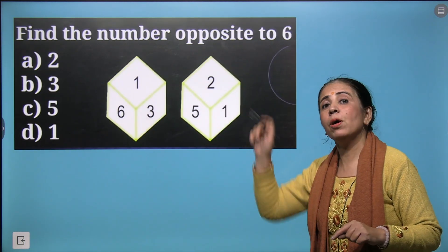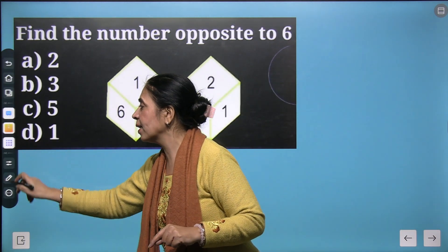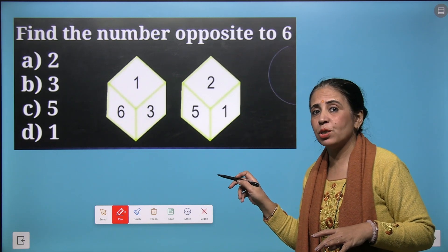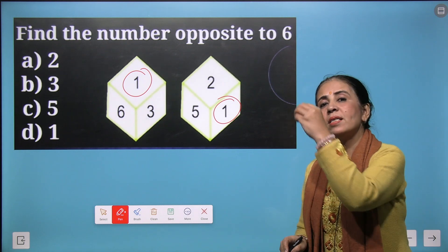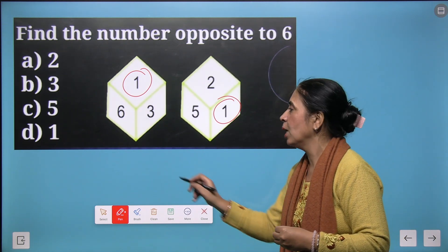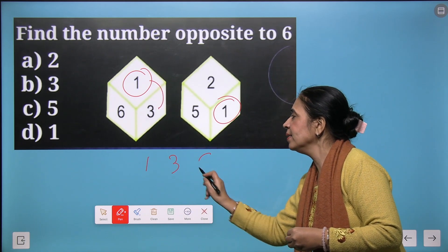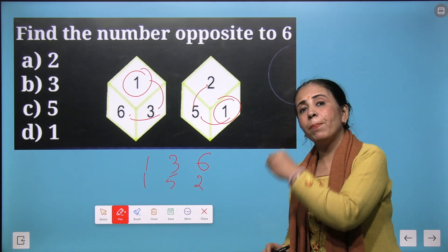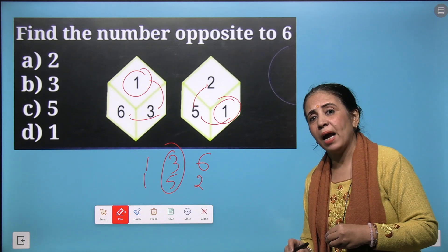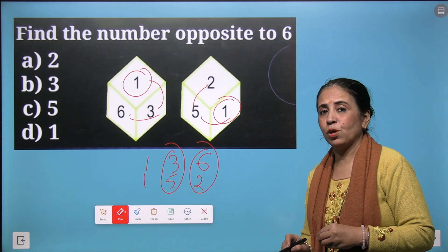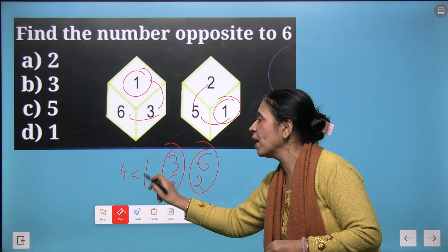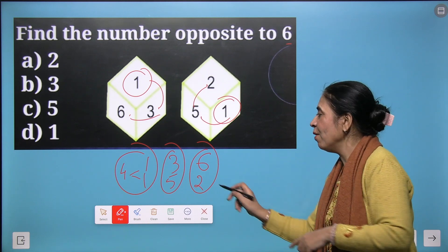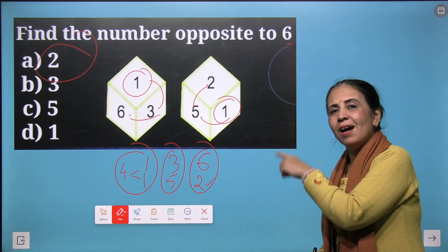Now let's take more example. You have to find the number opposite to 6. So here how many dice are given? We have 2 dice and we will see that in 2 dice what number is common. We have 1 common in both the dice. So let's start from 1 and move in a clockwise direction. We write down 1, 3 and 6 right. Now from here we write 1, 5 and 2. So it simply indicates that these are 2 opposite sides of a cube. These are 2 opposite sides of the cube and which one is left? 4 and 1 are opposite sides. Now you need to know what is opposite to 6. Can you help me here? Perfect. It is 2. So we get 2 as the right answer.